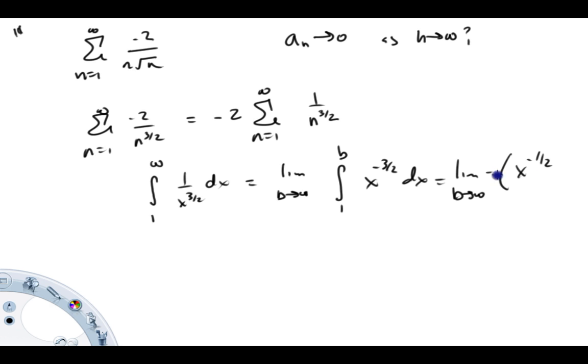I'll just put the minus sign here. Actually, I'll put the 2 there as well. And then this is evaluated 1 to b.